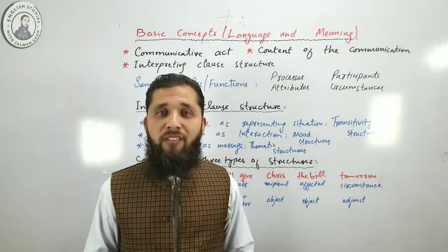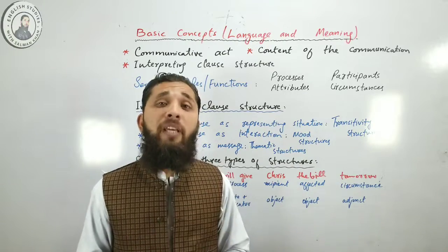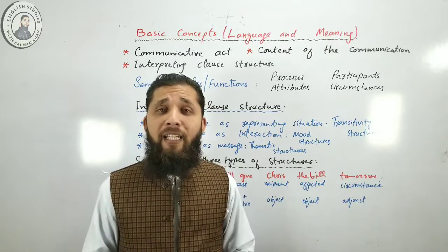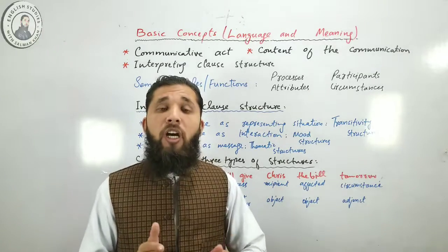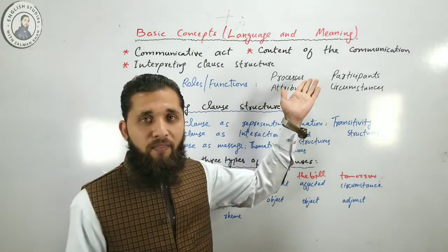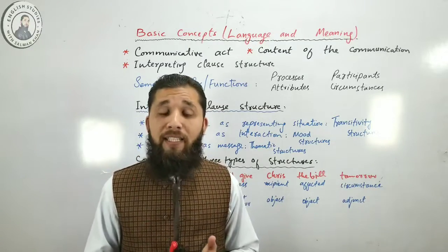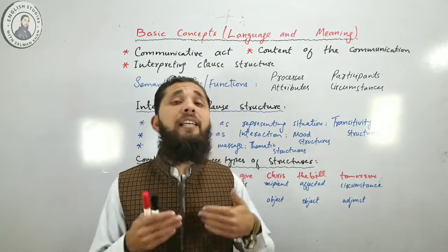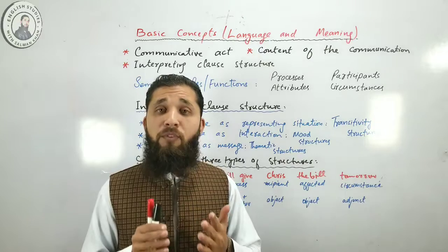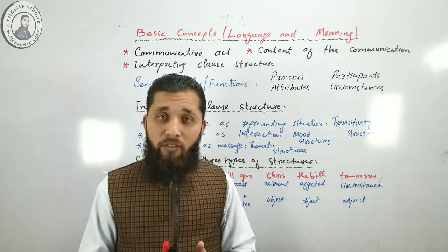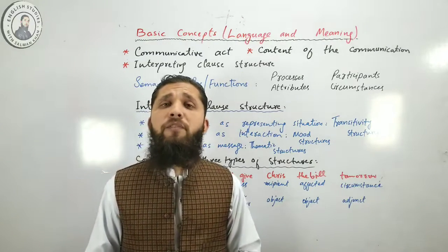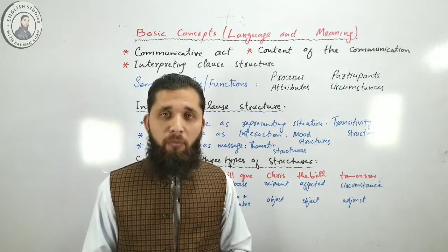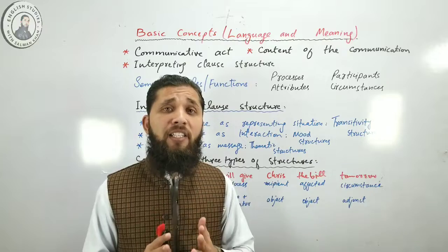Processes are actions, events, states, and types of behavior. Participants are entities of all kinds — not only human but also inanimate, concrete, and abstract — which are involved in the process. Attributes are qualities and characteristics of the participants. Circumstances are any kinds of contingent fact or subsidiary situation associated with the process or the situation. The kind of meaning expressed by this semantic structure is known as representational meaning, or the meaning that has to do with the content of the message.